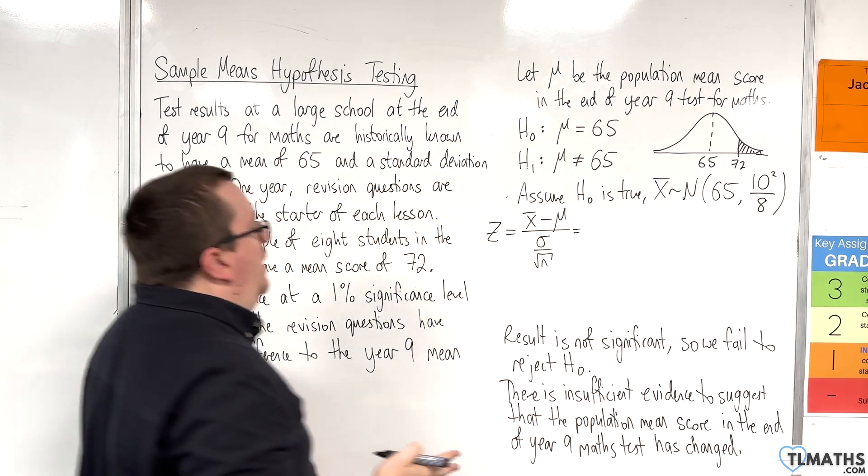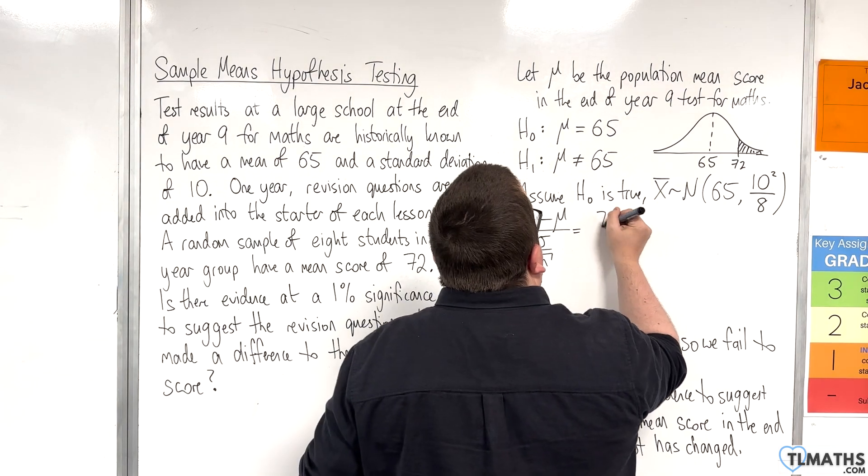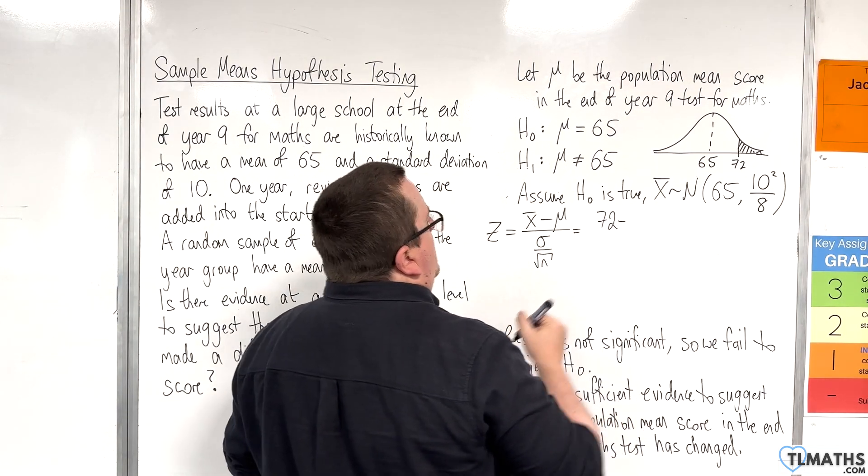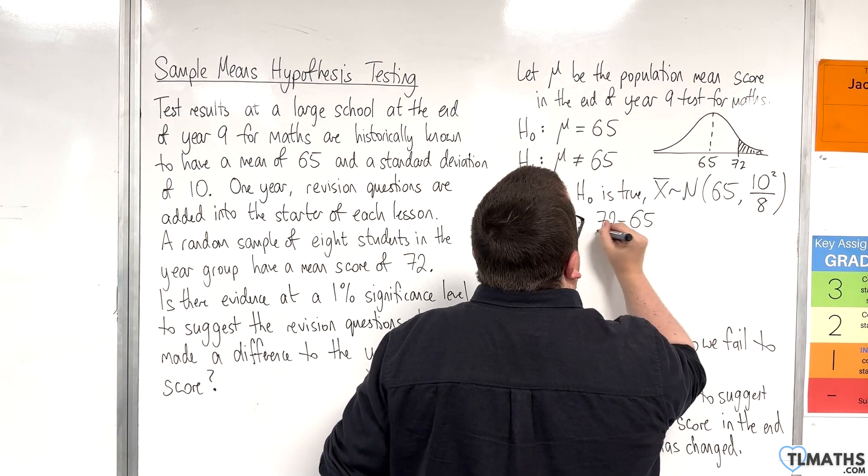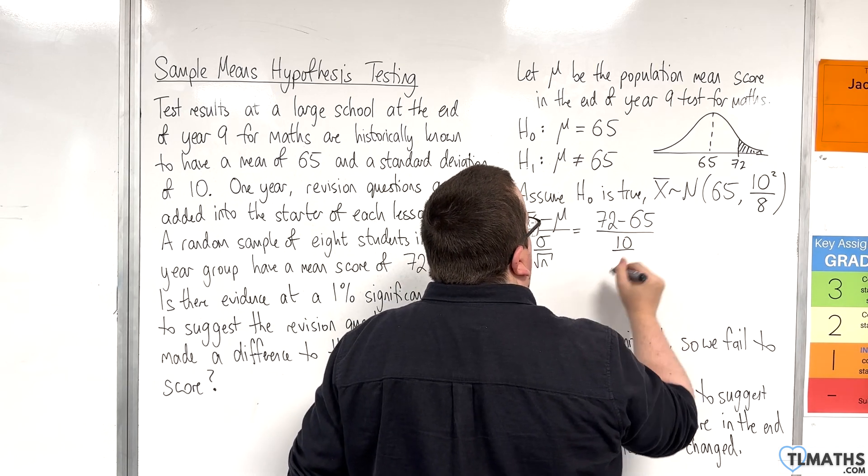X bar is 72. That's the sample mean we are testing. Mu is 65. Standard deviation is 10. Sample size is 8.